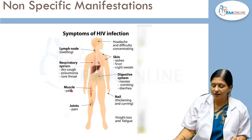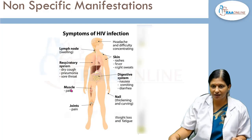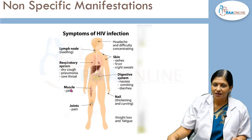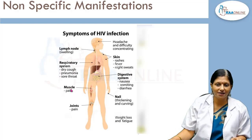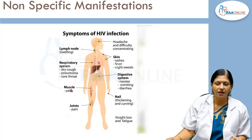Once HIV infection leads to manifestation of the disease, symptoms can include headache, difficulty concentrating, skin rash, fever, and night sweats. It can also cause nausea, vomiting, diarrhea, and nail thickening and curving.